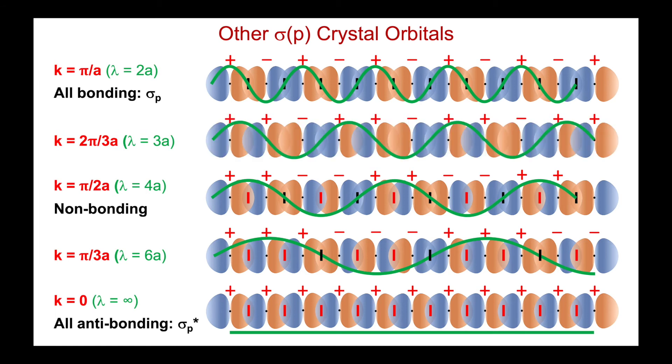Here's two-thirds pi over a. In this case, lambda is 3a. And now we know change in sign for the px orbitals results in a bonding interaction. As I increase k, I'm increasing the sign changes of the atomic orbital contributions. But now everything's reversed in terms of energetics. I'm getting more and more bonding as I move up the slide.